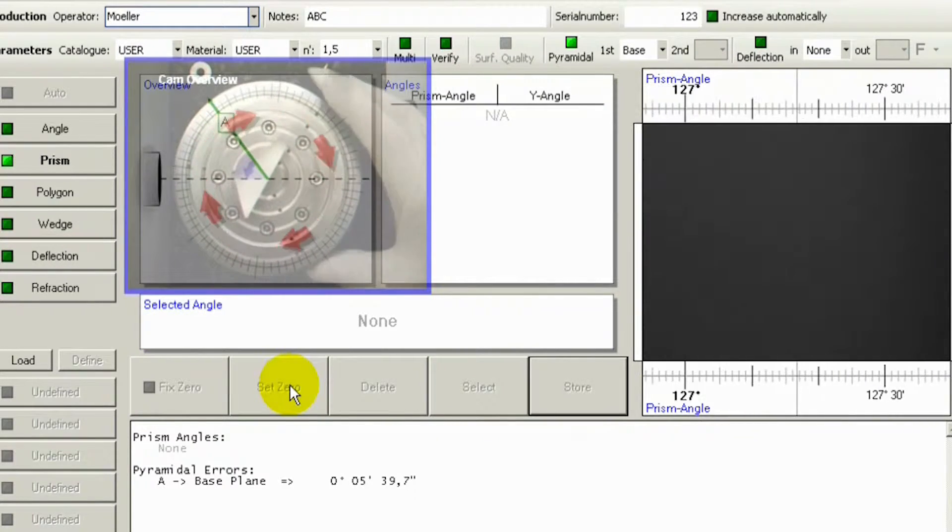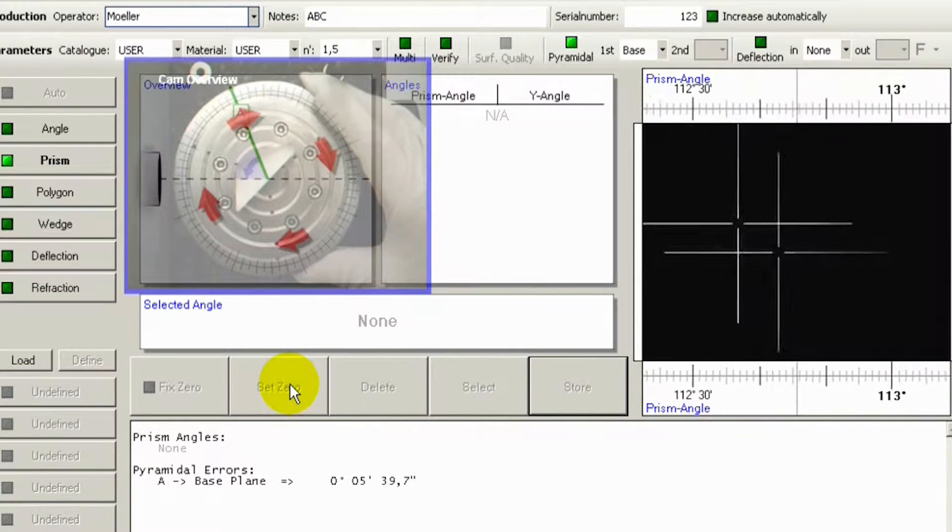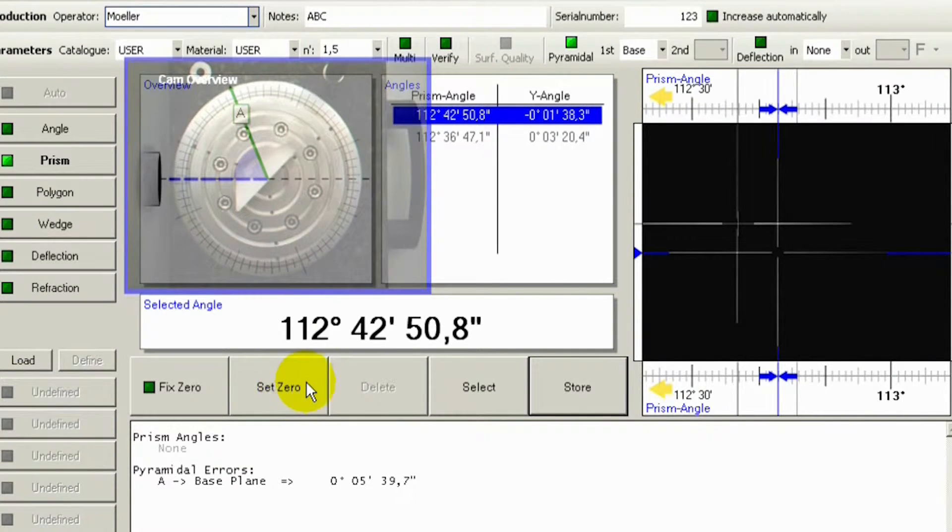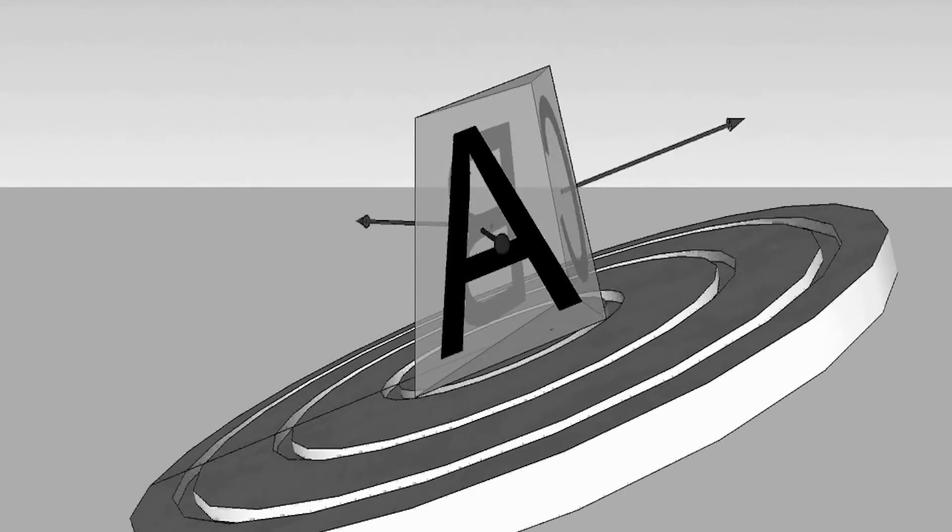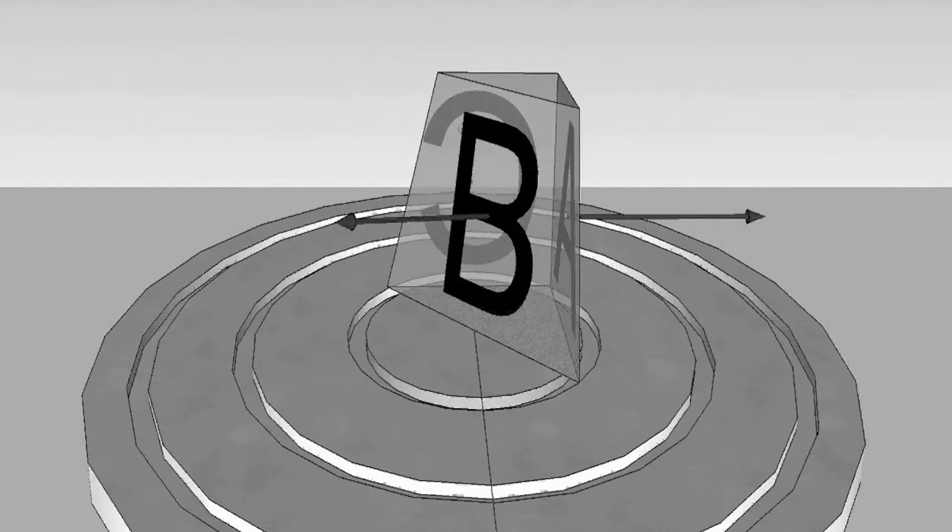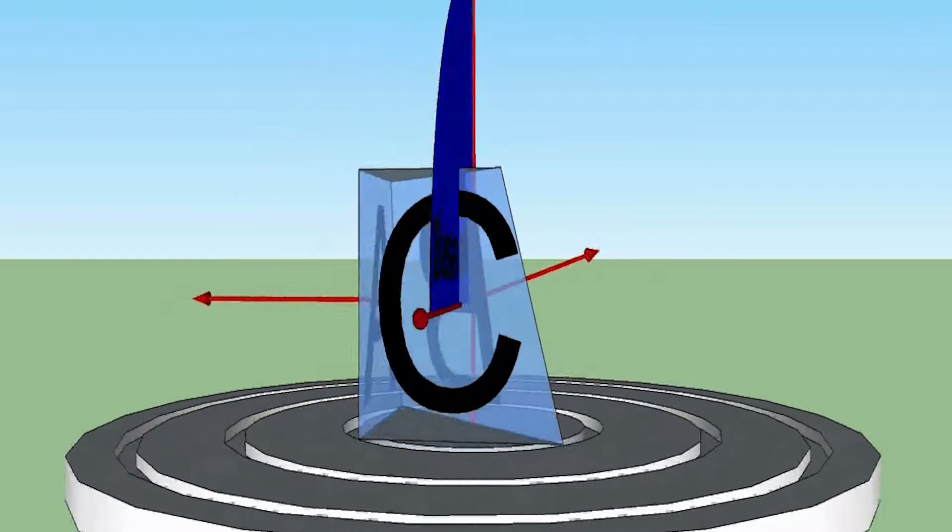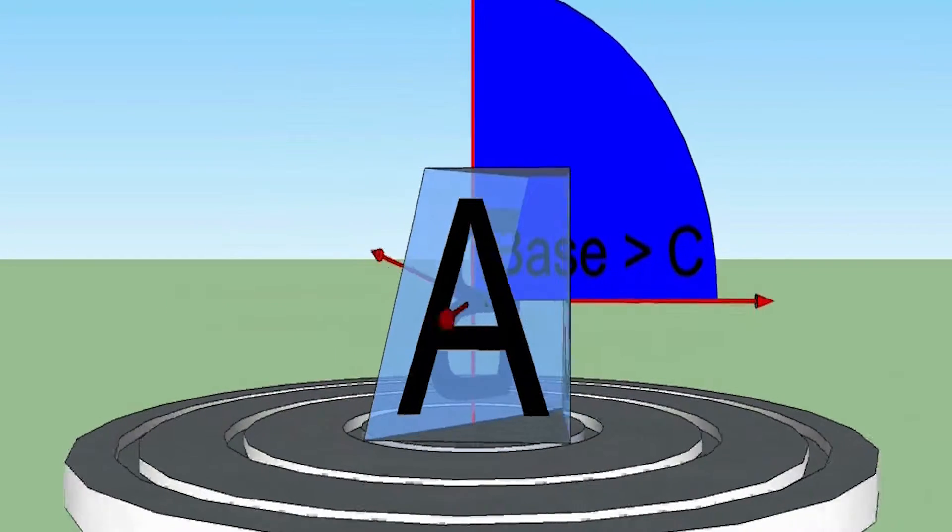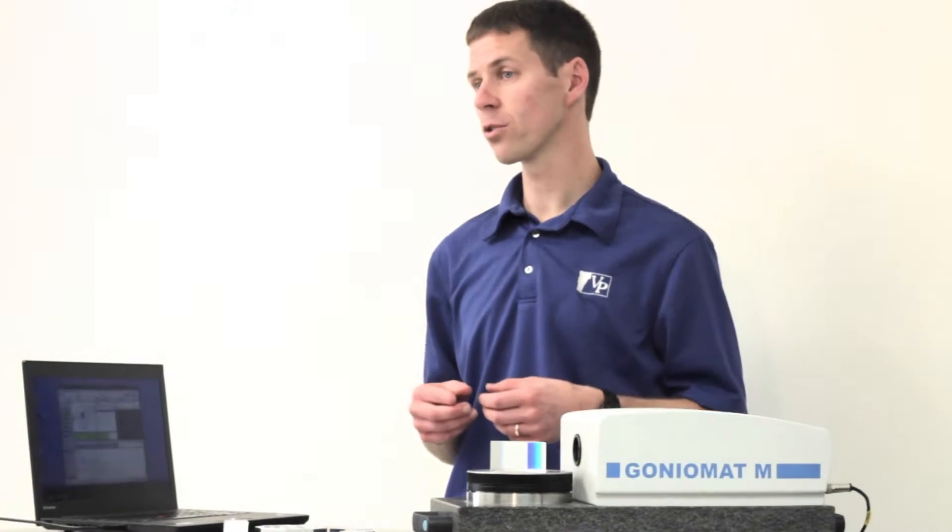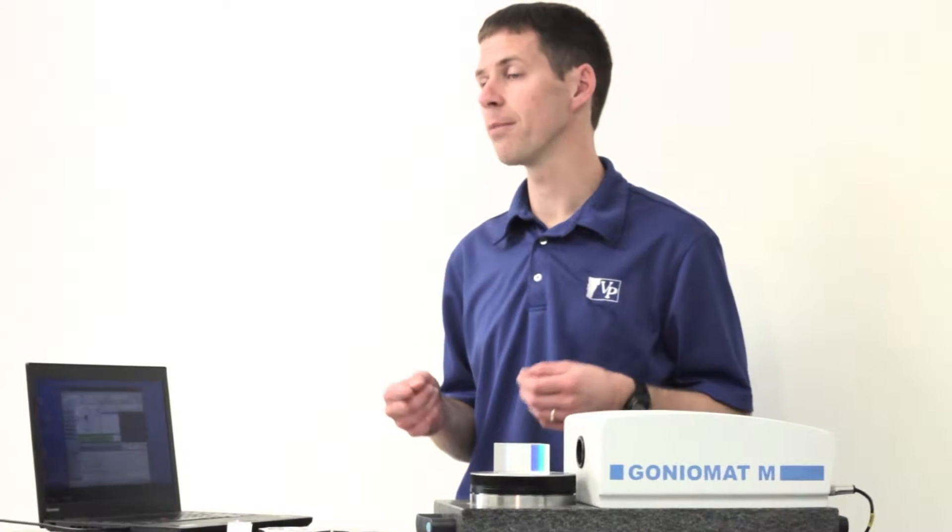The powerful GoniMATIC software integrates a rotary table and an encoder with an electronic autocollimator. GoniMATIC accounts for pyramidal error of your prism or system automatically by using a virtual tilt table and can report the results referenced to whatever desired plane you want to use. GoniMATIC can also report the results as prescribed in common ISO standards.